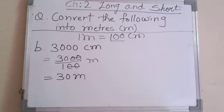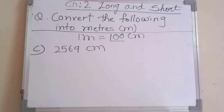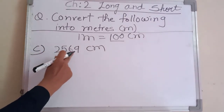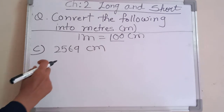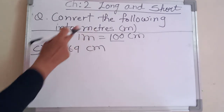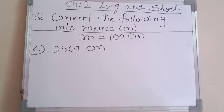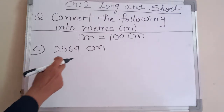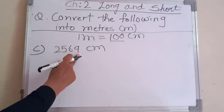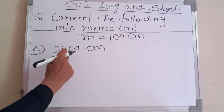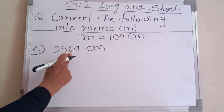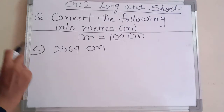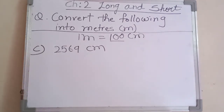Let's go to the next example. Our third example is two thousand five hundred sixty nine centimeter, also converted into meter — so we divide by hundred. But here, is it possible to divide directly? No, because the last two digits are not zero, unlike the previous examples.